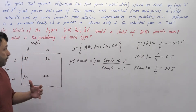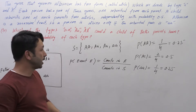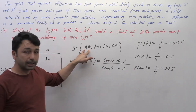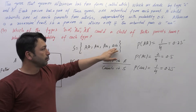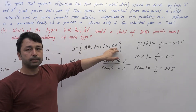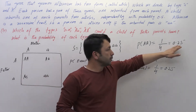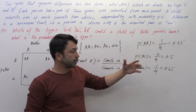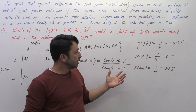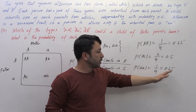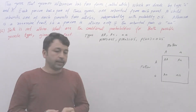So the different types that a child of Beth's parents can have are: both capital 'AA', capital 'A' small 'a', and both small 'aa'. Their corresponding probabilities are 0.25 for both capital 'AA', 0.5 for capital 'A' small 'a', and 0.25 for both small 'aa'. Now let's come to Part C.